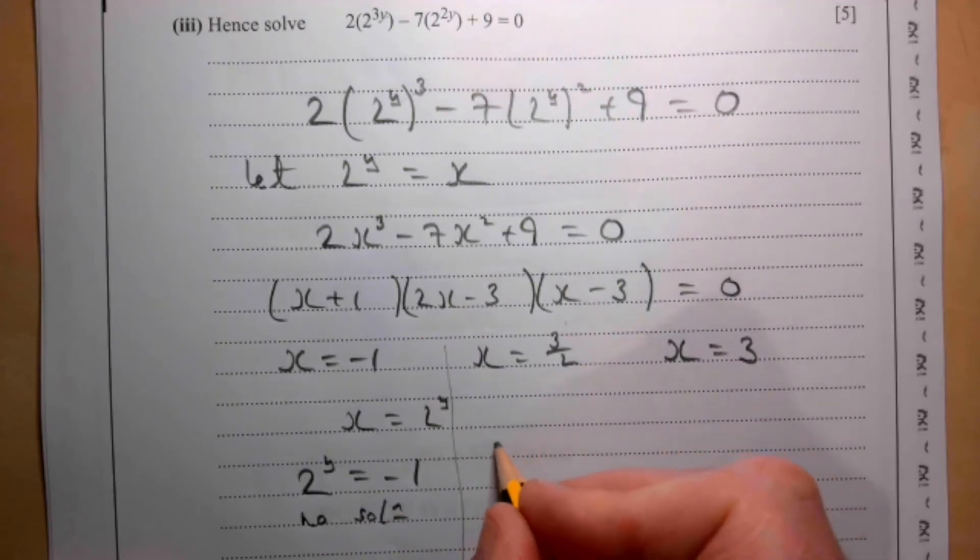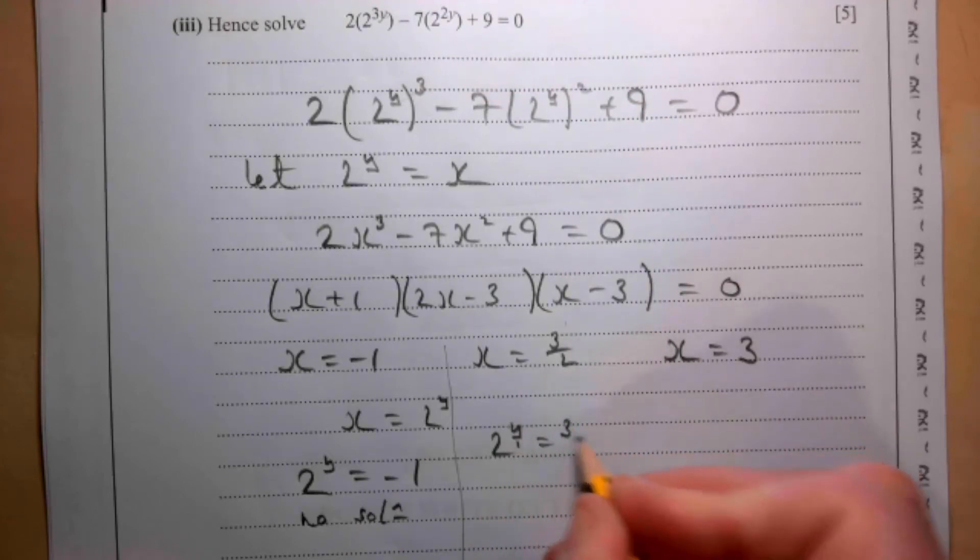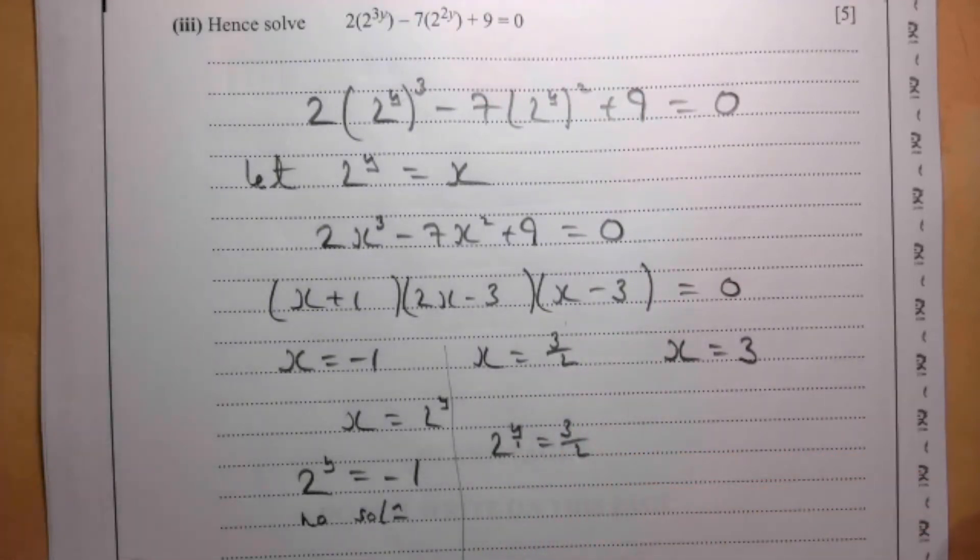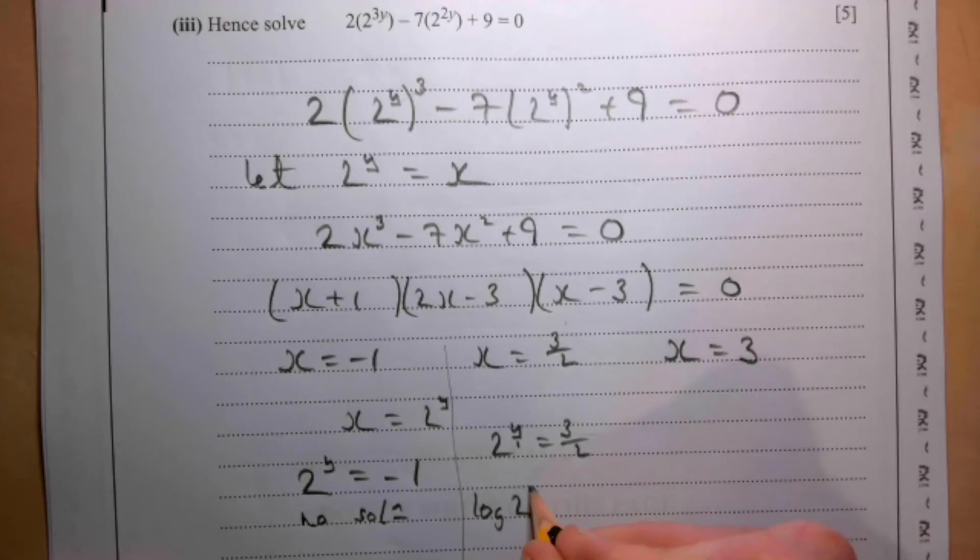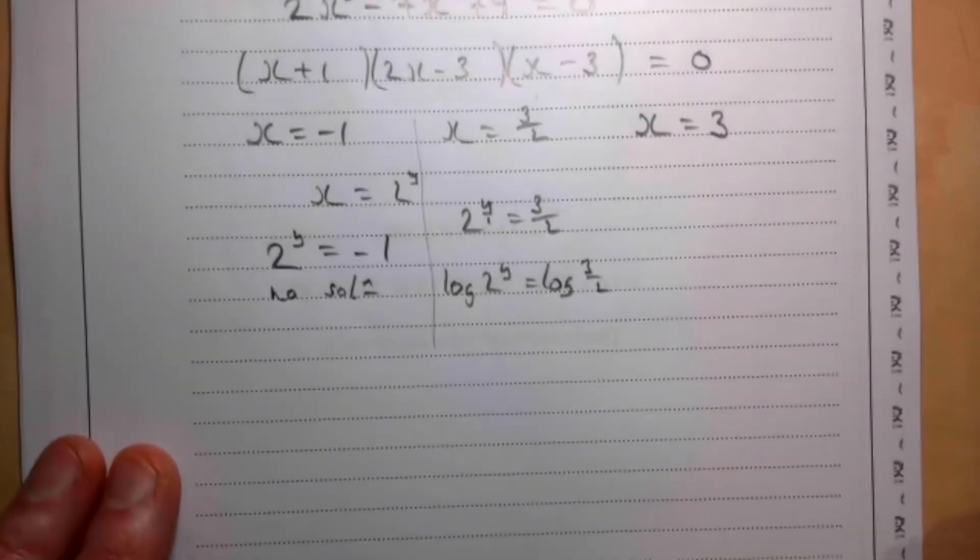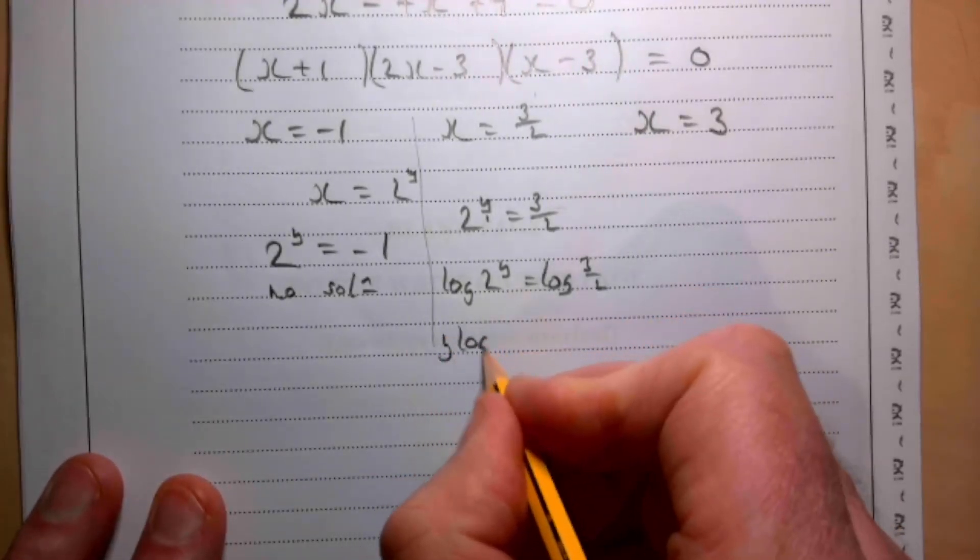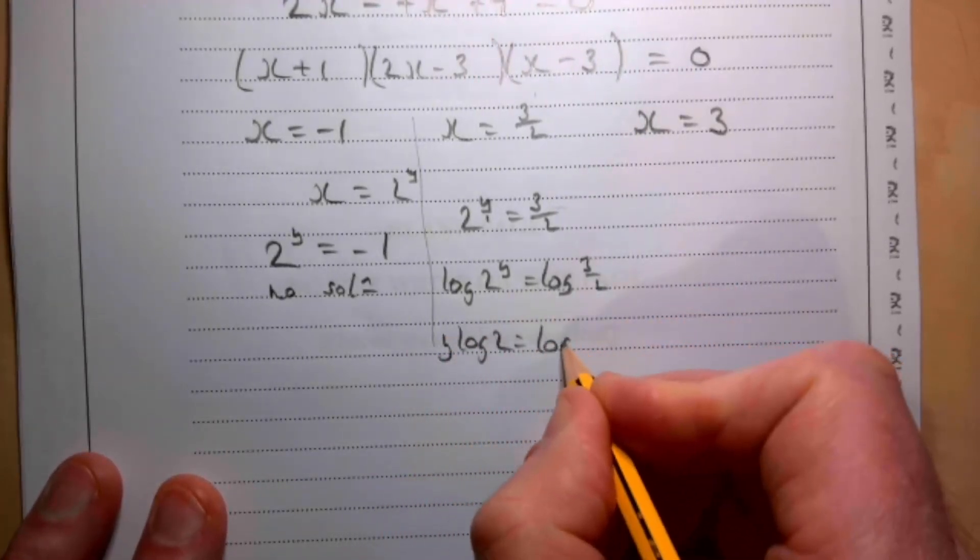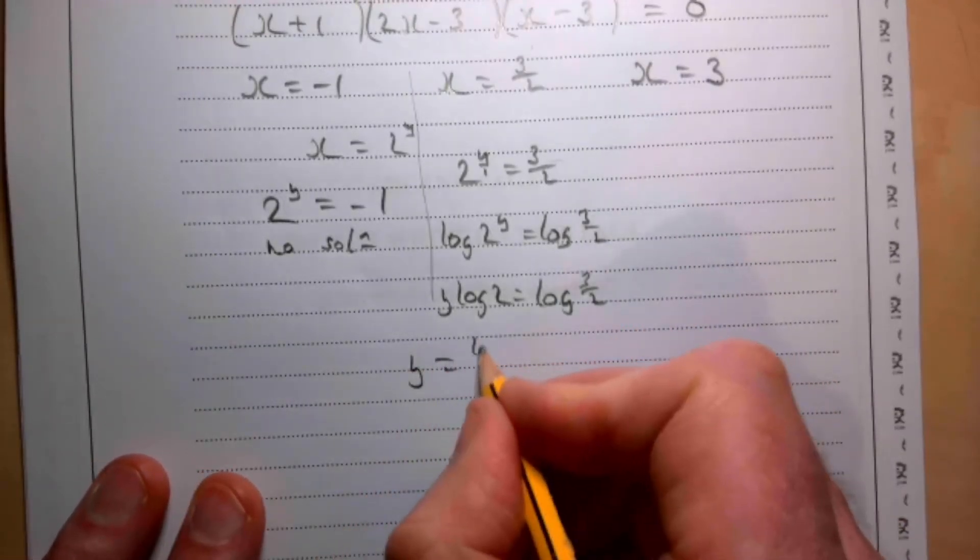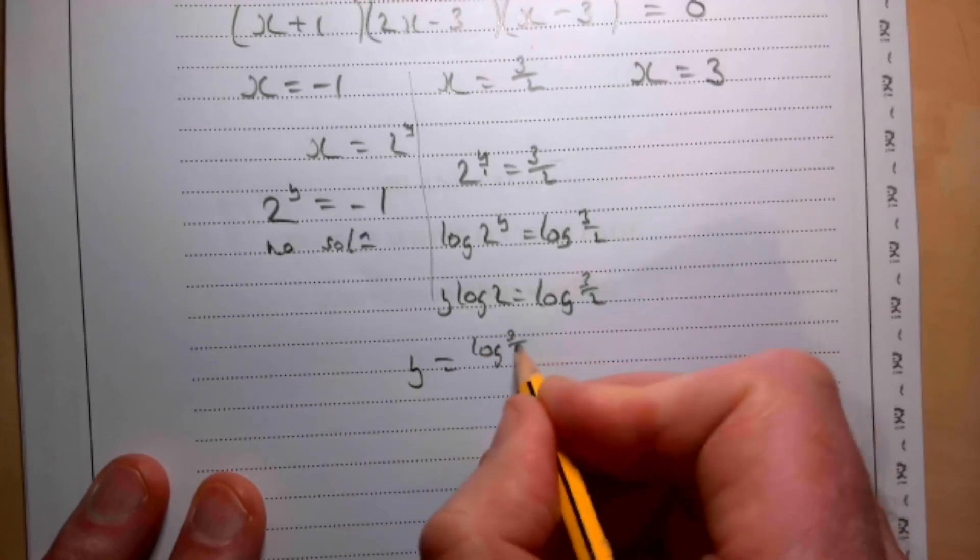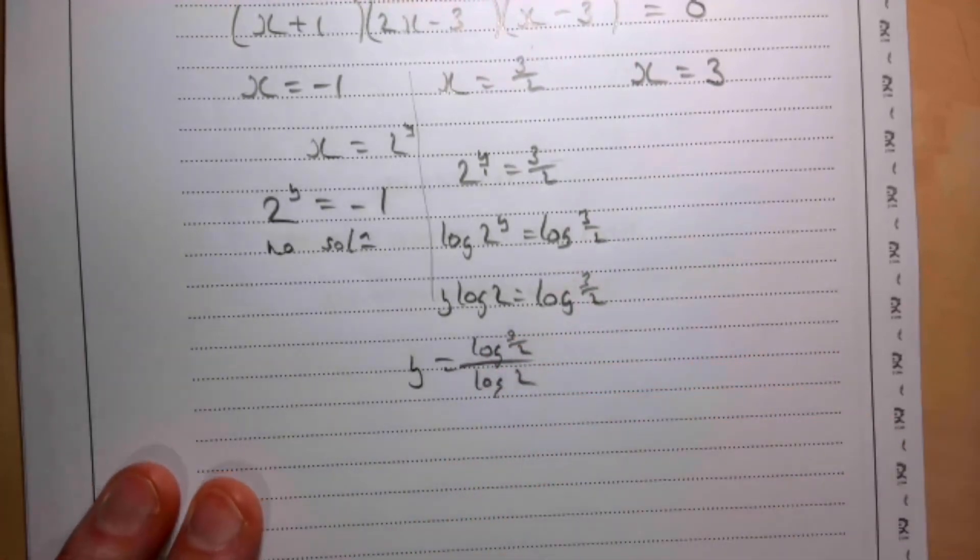2^y is equal to 3/2. So I can solve that by taking logs of both sides. log(2^y) is log(3/2). y·log(2) is log(3/2).